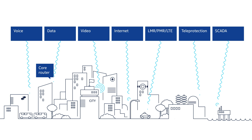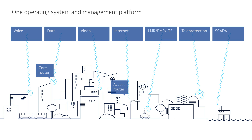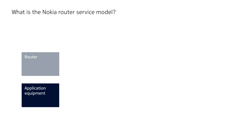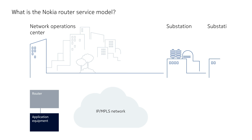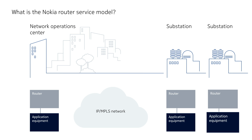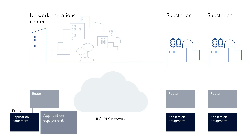From terabit scale core to gigabit weatherproof access routers, all leveraging one common operating system and management platform, the Nokia model is service centric as opposed to the more common but generic routing model geared for best effort connectivity. The Nokia model is optimized towards efficient and reliable delivery of a variety of services for critical and business applications.